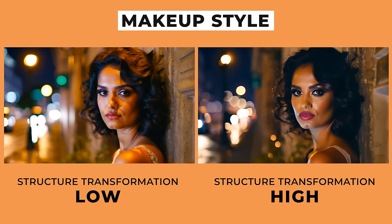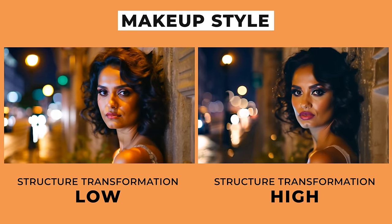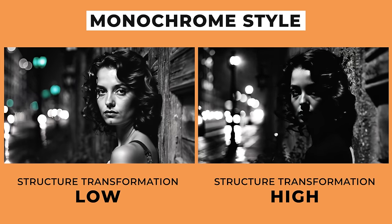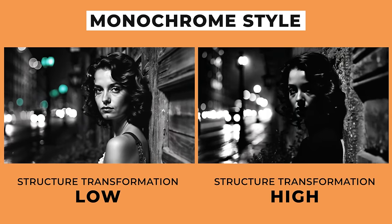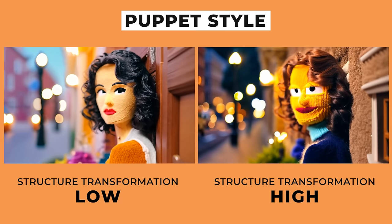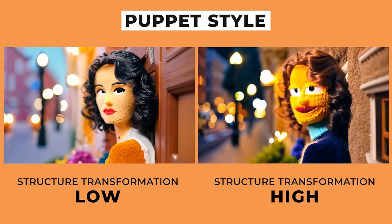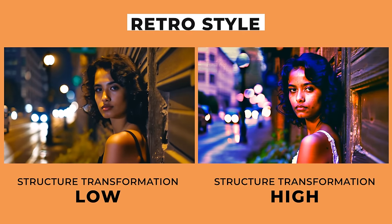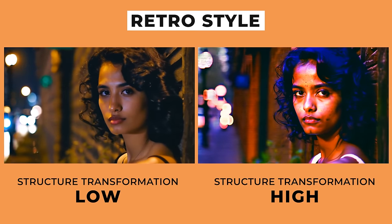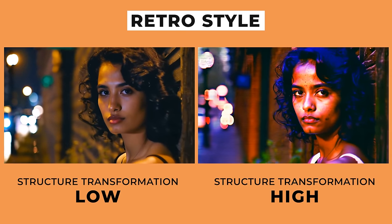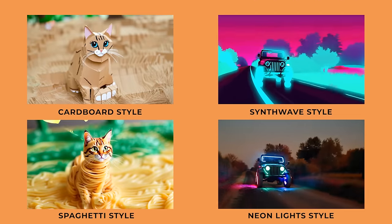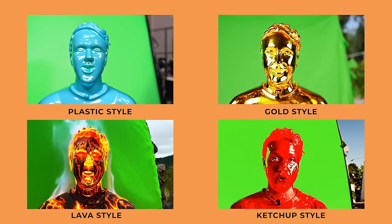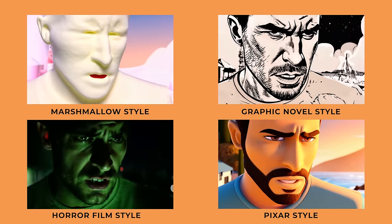Here we have makeup style, which works best at enhancing facial features — it's added lipstick and makeup to the character. Here we have monochrome style, emulating that black and white film look. I really love the look of the low one, as the high is a bit too dark, but you could try a medium setting. Puppet style is definitely a fun one — the low one looks more like the character, whereas the high setting has made her yellow and completely different. Here we have retro style, which tries to emulate old VHS style footage, and if you look closely on the high setting you can see it's added a kind of texture over the video. I've experimented with so many different styles that Runway doesn't provide, and there are some incredible results — here's a quick montage of some of my favorites. Remember, you can download a free PDF with all the prompts I used down below.